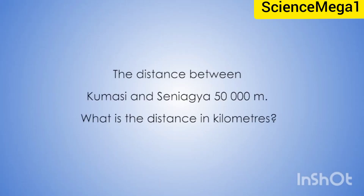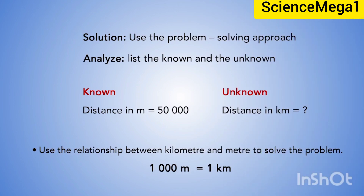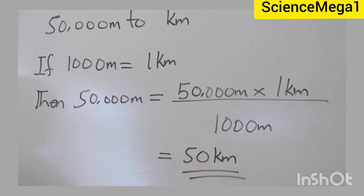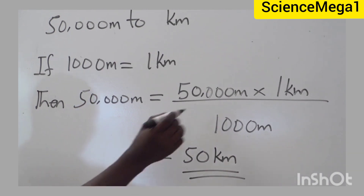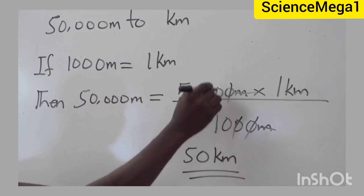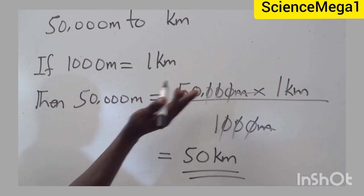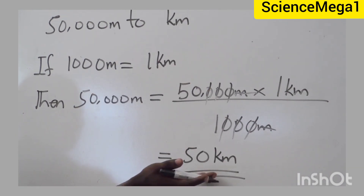Now let's look at a second example. The distance between Kumasi and Senyeja is 50,000 meters. What is the distance in kilometers? The question requires us to convert 50,000 meters to kilometers. We know that 1,000 meters is equal to 1 kilometer. Then 50,000 meters multiplied by 1 kilometer divided by 1,000 meters — cancelling out meters and zeros — gives a final answer of 50 kilometers.